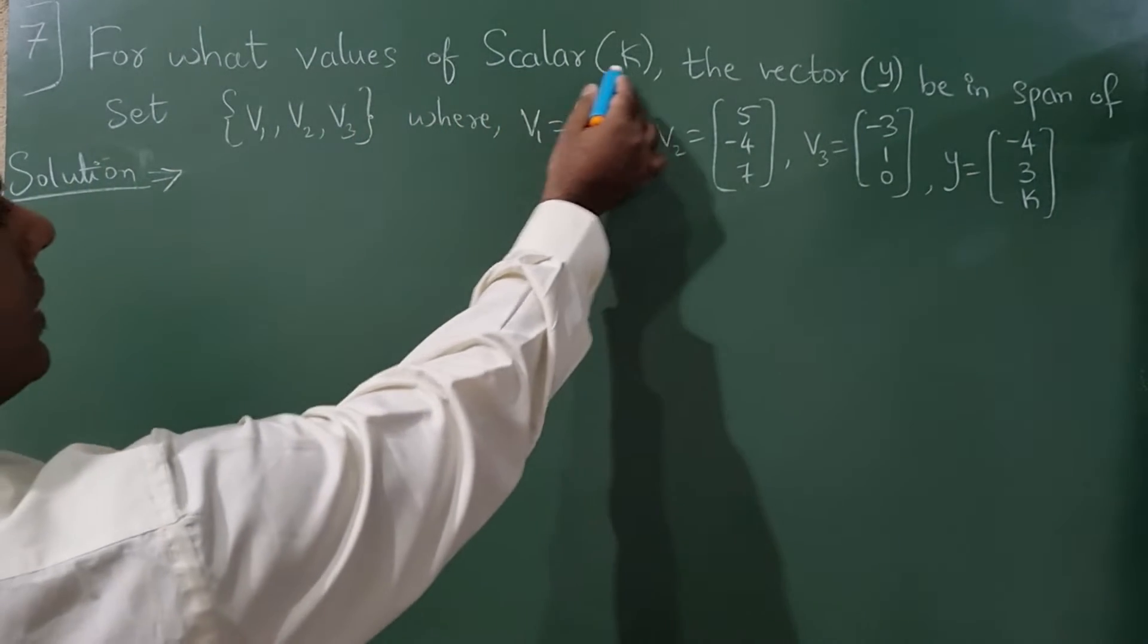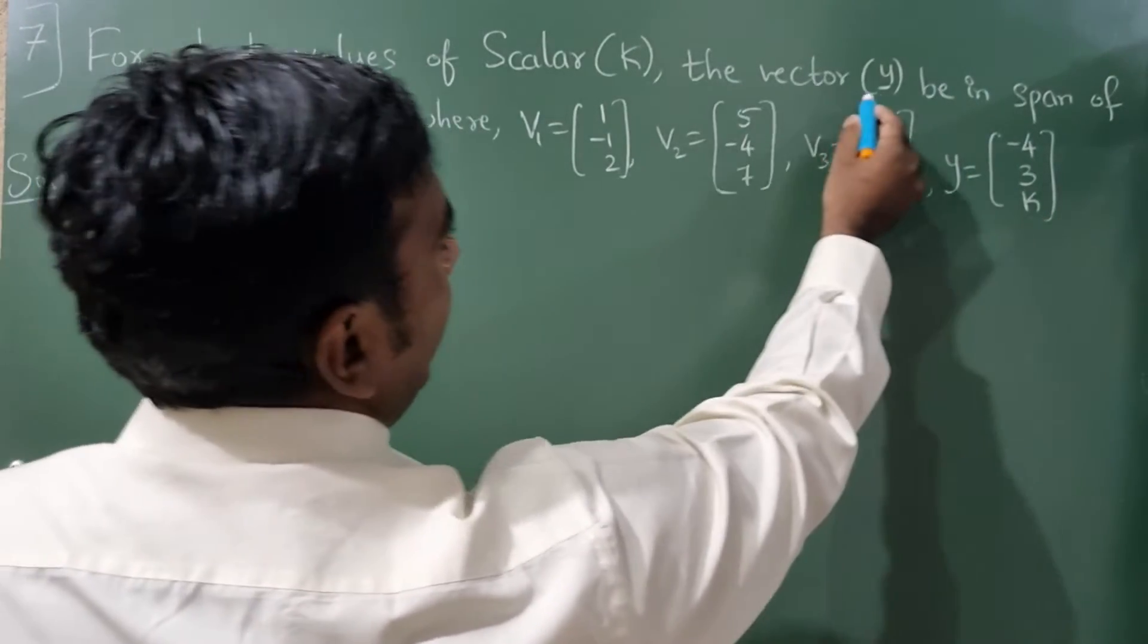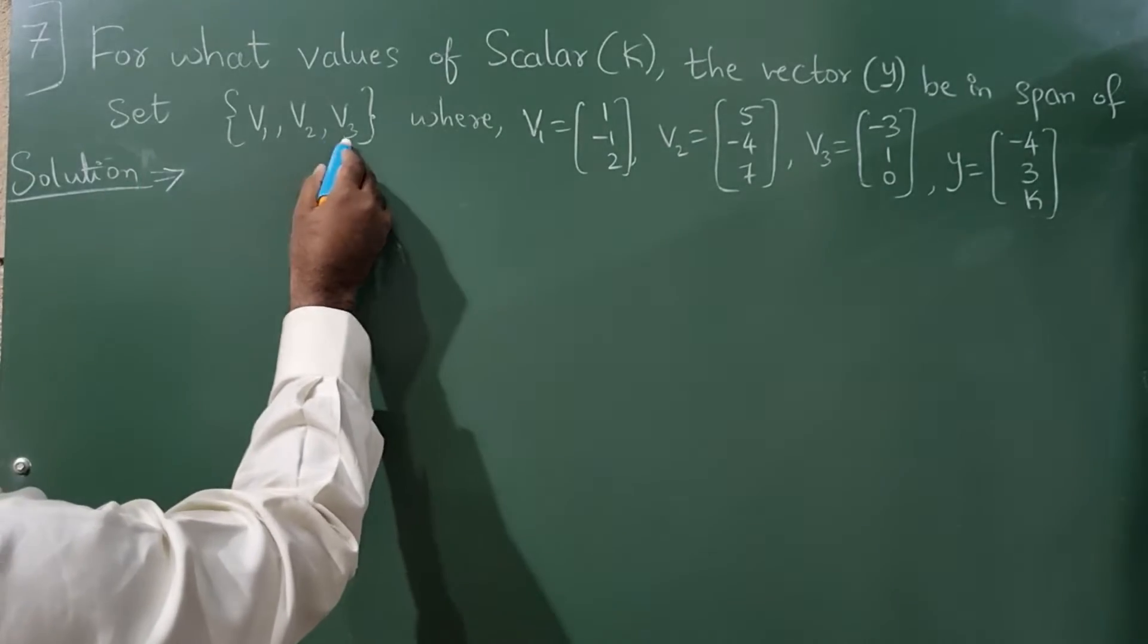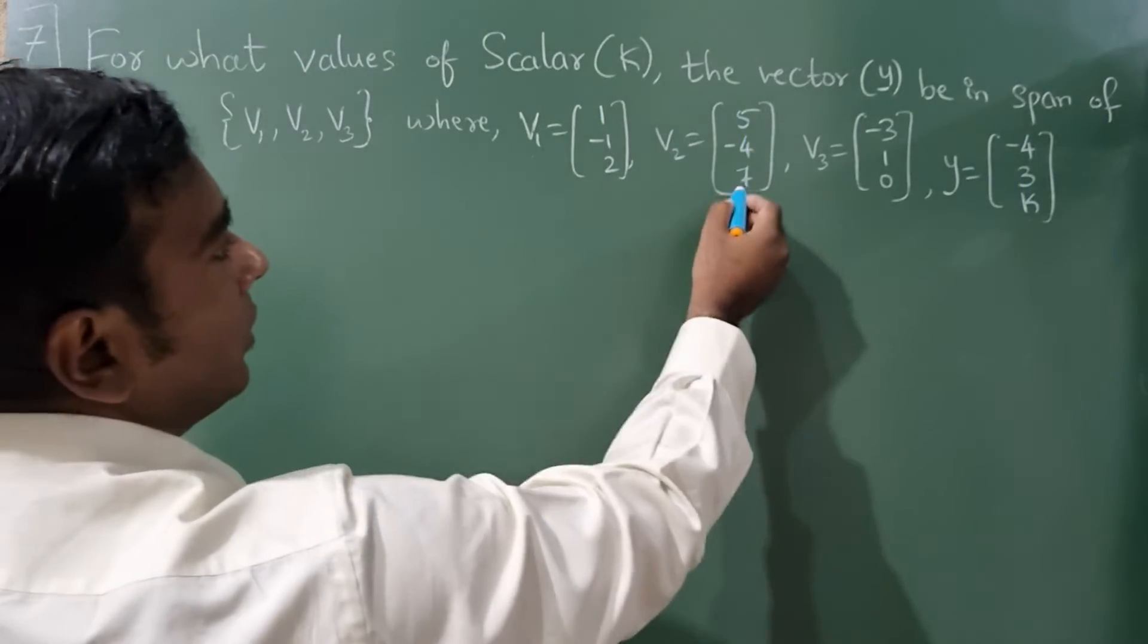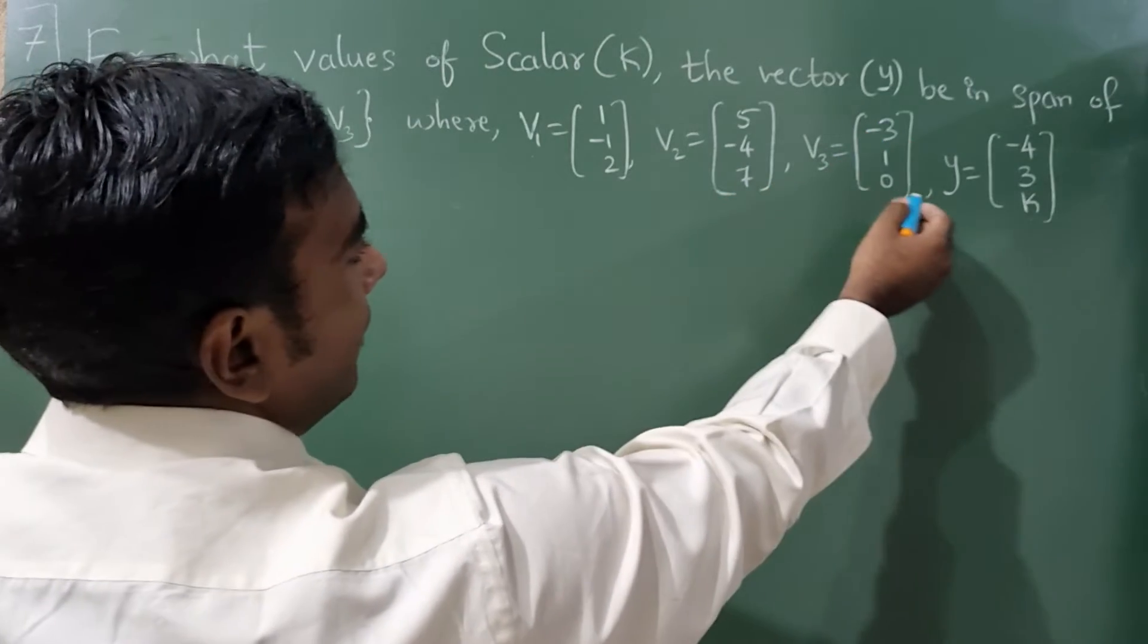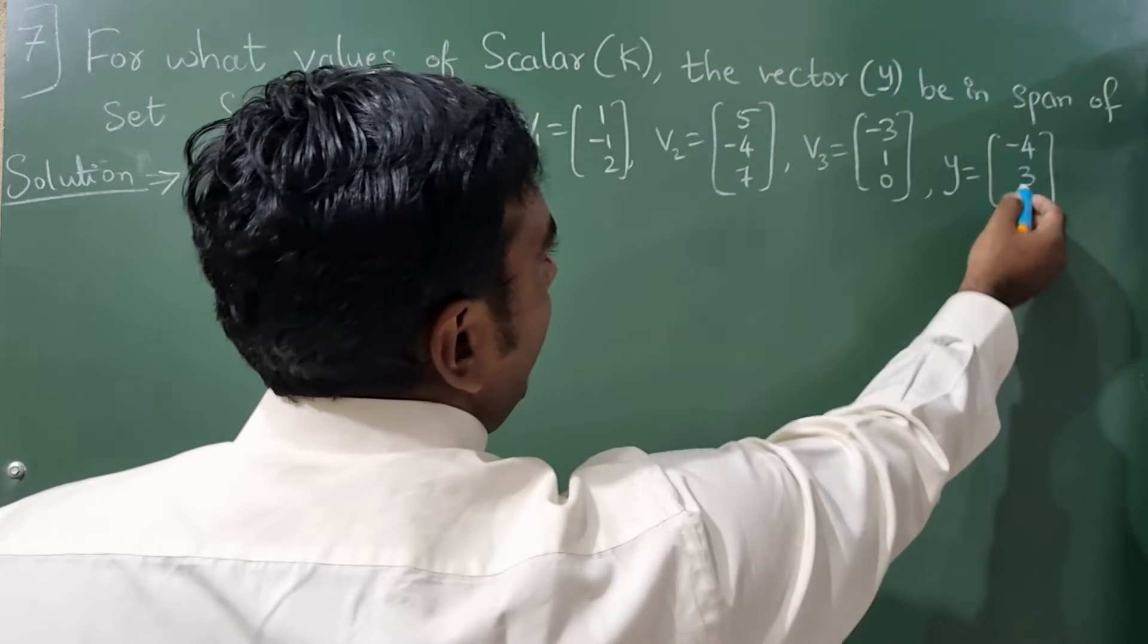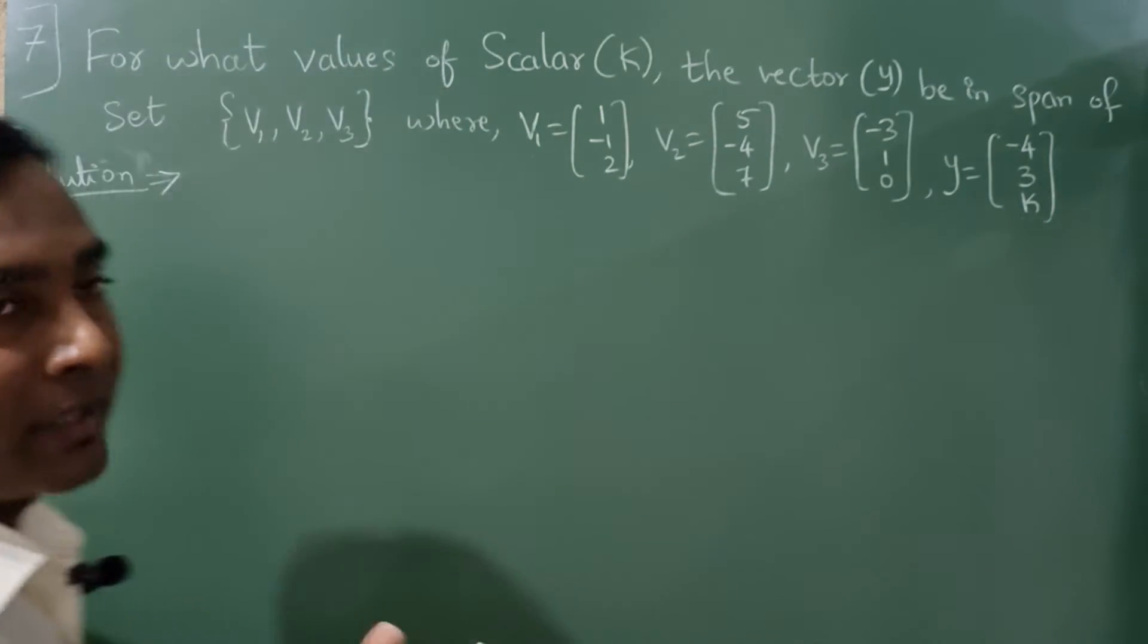For what values of scalar k, the vector y be in the span of the set v1, v2, v3 where v1, v2, v3 they have given matrix and y they have given matrix values as a, minus 4, 3, and k. We need to find k. Remember that.